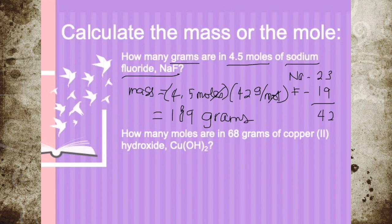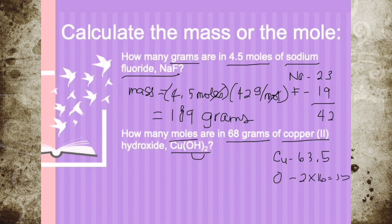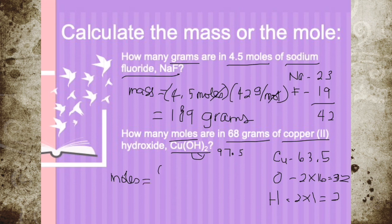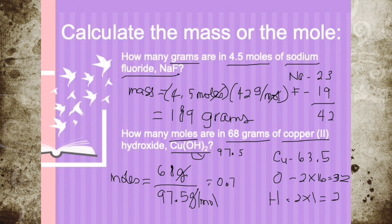Next example: how many moles are in 68 grams of copper(II) hydroxide? First, find the molar mass. Copper is 63.5; oxygen is 2 times 16, which is 32; hydrogen is 2 times 1, which is 2. So 63.5 plus 32 plus 2 gives a molar mass of 97.5 grams per mole. To find moles: 68 grams divided by 97.5 grams per mole. Grams cancel, giving 0.7 moles.